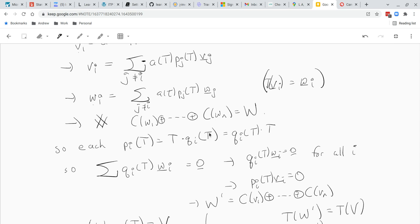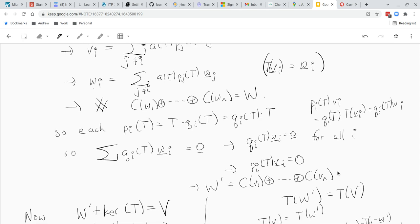In particular, Pi of T of Vi is just Qi of T times T of Vi, which is Qi of T of Wi. And so we have a linear combination of the cyclic subspaces of the Wi's equals zero. Since that's a direct sum, we have Qi of T of Wi equals zero for all i. But we saw Qi of T Wi is just Pi of T Vi. So each term in the sum is zero. So W prime is the direct sum of C of Vi of all the cyclic subspaces.